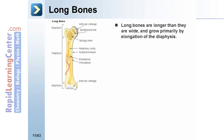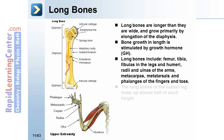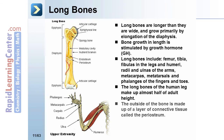Long bones are longer than they are wide and grow primarily by elongation of the diaphysis. Bone growth in length is stimulated by growth hormone (GH). Long bones include the femur, tibia, and fibula in the legs, and the humerus, radius, and ulna of the arm, as well as the metacarpus, metatarsals, and phalanges of the fingers and toes. The long bones of the human leg make up almost half of adult height. The outside of the bone is made up of a layer of connective tissue called the periosteum.